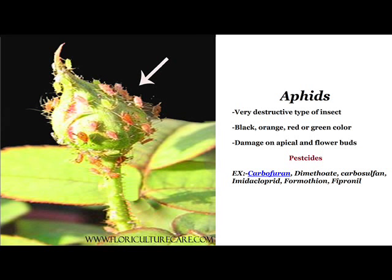In severe conditions, slower growth, malformed flowers, or late opening of flowers are the resulting symptoms. Contactable insecticides like Permethrin and Primiphos-Methyl are also effective.